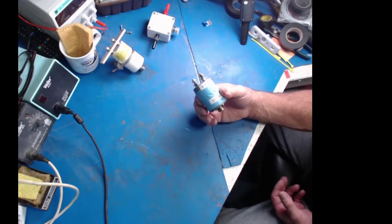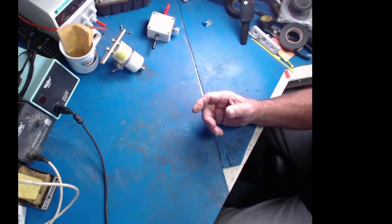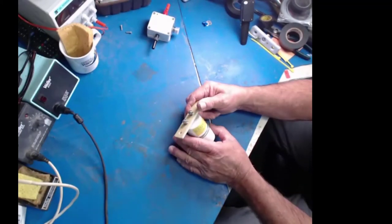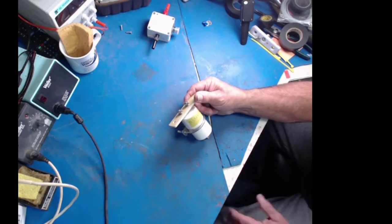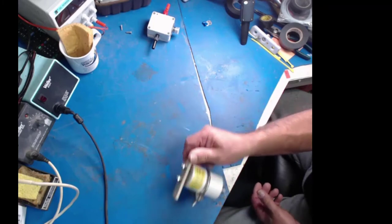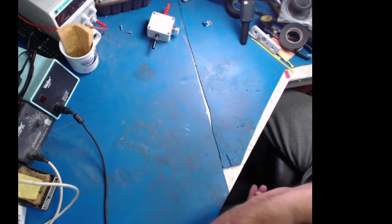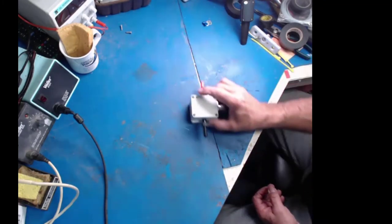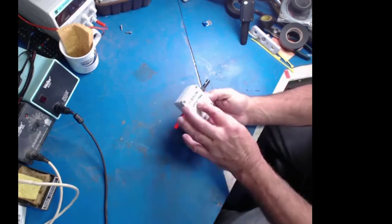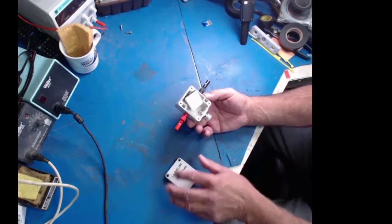This one is another one from across the pond as well and it actually does work. It is a 1 to 1 balun, so you can imagine how large the ferrite is inside it.